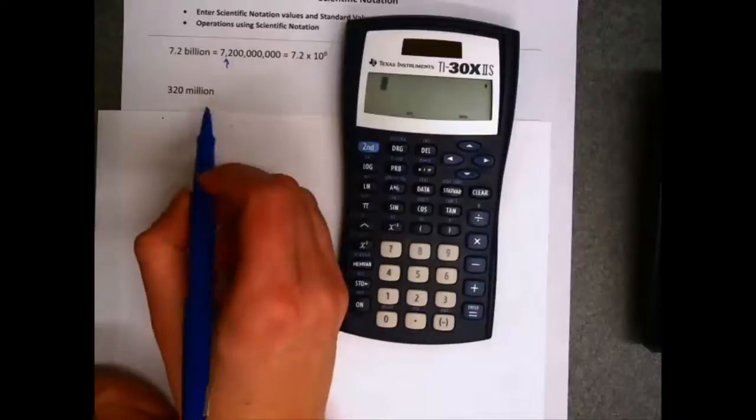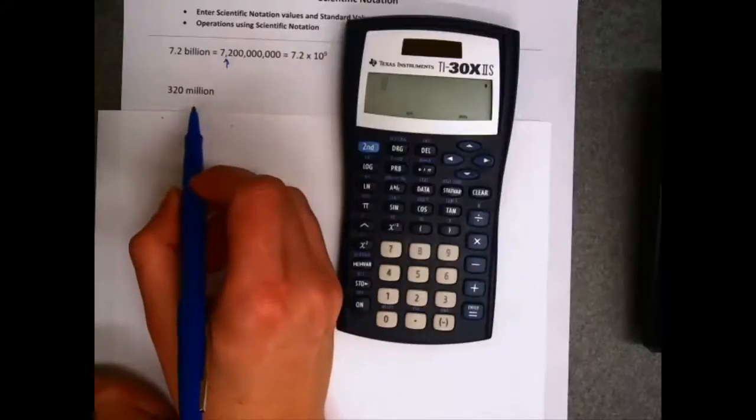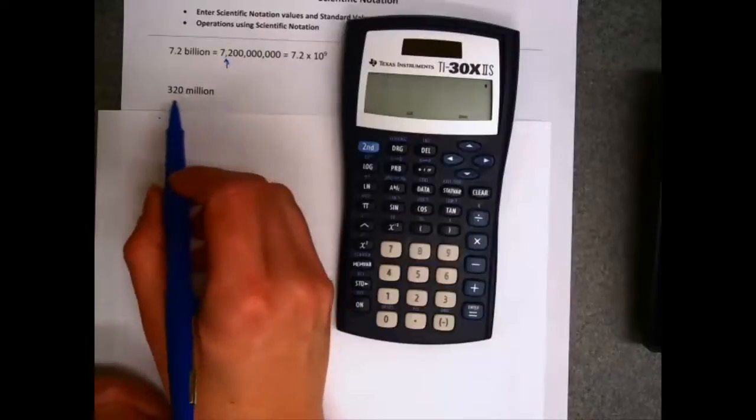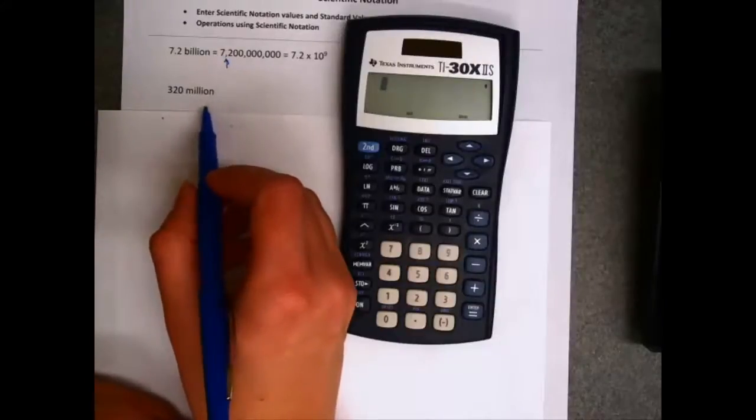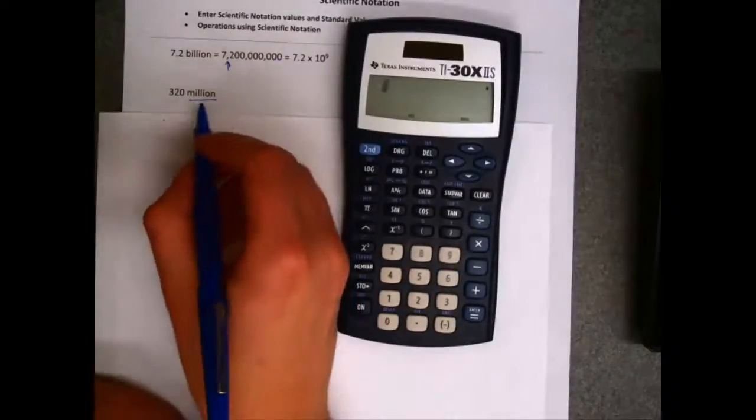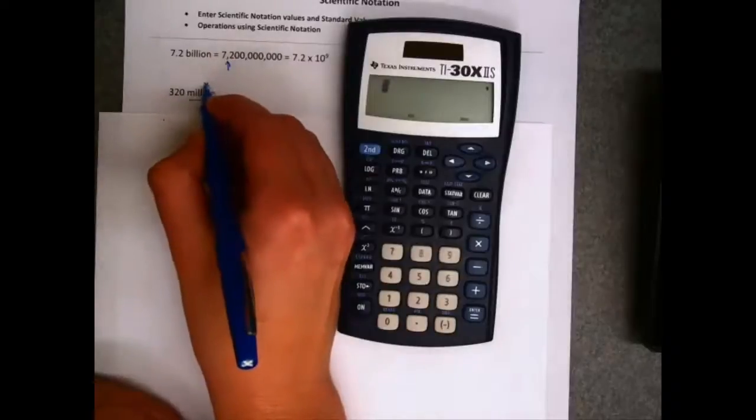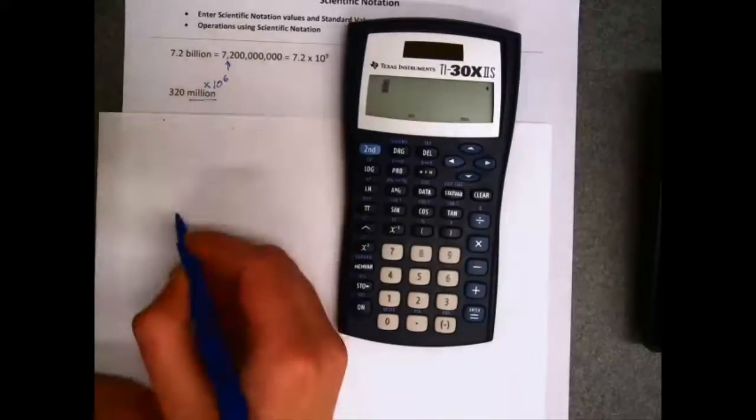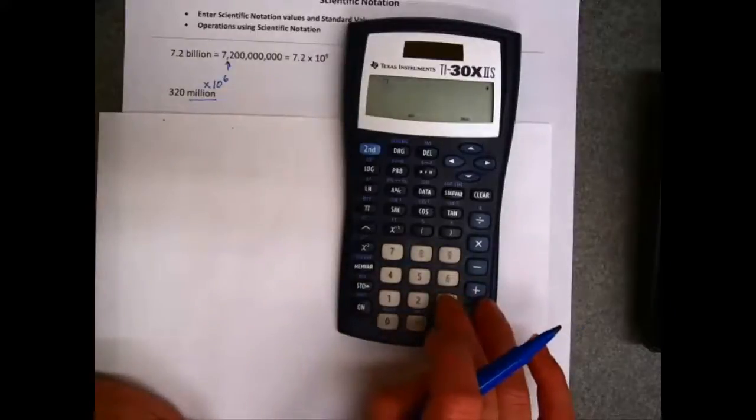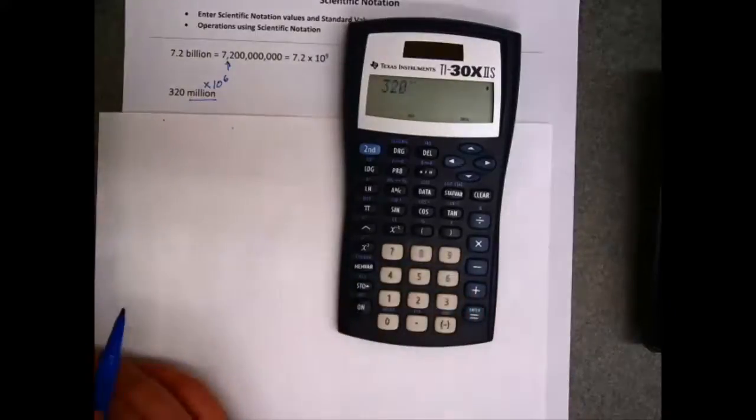The other nice thing about this is you don't have to start off knowing the scientific notation. You don't even have to start off typing in all those zeros. So the U.S. population is about 320 million. I know that million is times 10 to the 6th, because a million is a 1 followed by 6 zeros. So you could kind of half use scientific notation here.